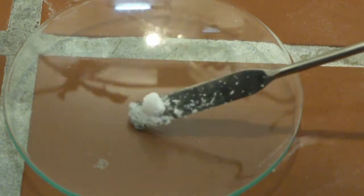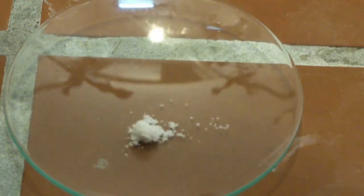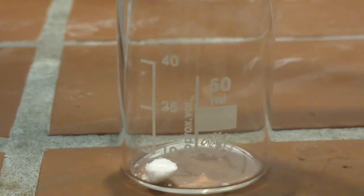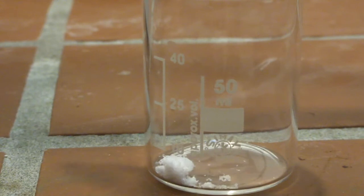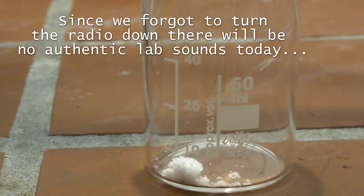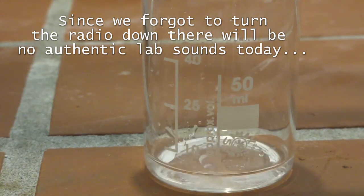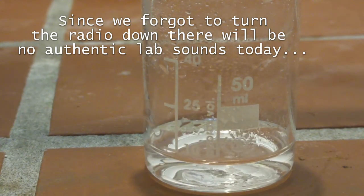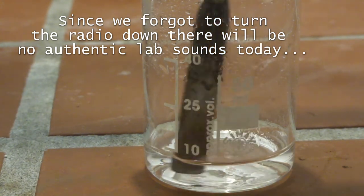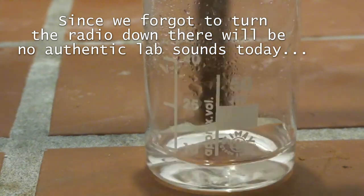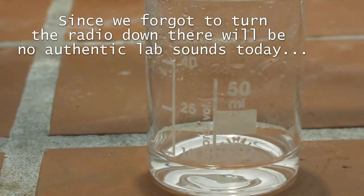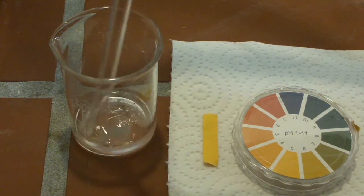Let's get started. Here is some para-toluene sulfonic acid. It is a white, slightly lumpy solid. As you might expect, it is a strong acid. To show this, we dissolve some of it in a little water. The thus obtained solution is strongly acidic.